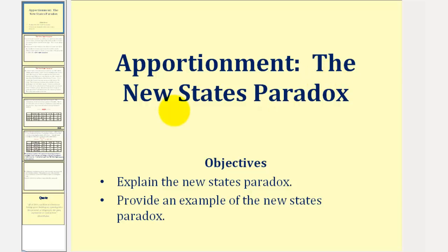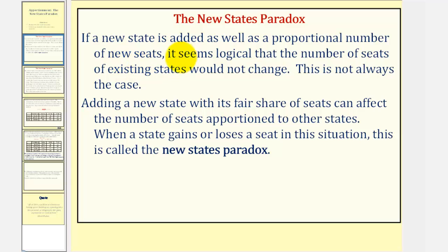Welcome to a lesson on the new states paradox of apportionment. If a new state is added along with a proportional number of new seats, it seems logical that the number of seats of existing states would not change. However, this is not always the case. Adding a new state with its fair share of seats can affect the number of seats apportioned to other states. When a state gains or loses a seat in this situation, this is called the new states paradox.